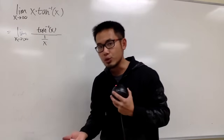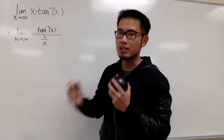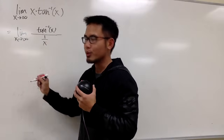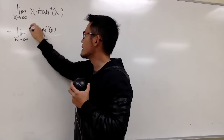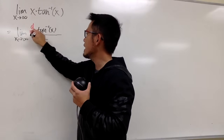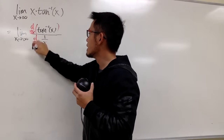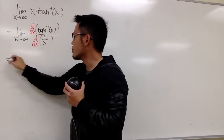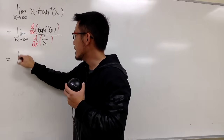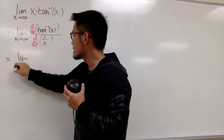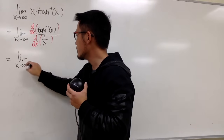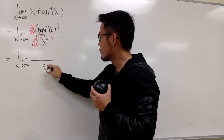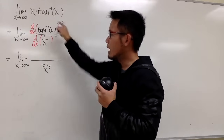The reason you may want to do this is so now we can use L'Hôpital's rule. Let's go ahead and do d/dx of the numerator and d/dx of the denominator. This is going to be the limit as x goes to infinity. On the bottom, the derivative of 1/x is negative 1 over x squared.